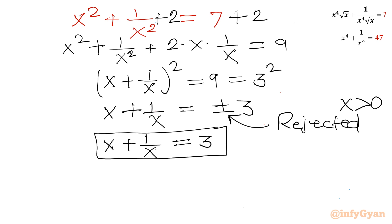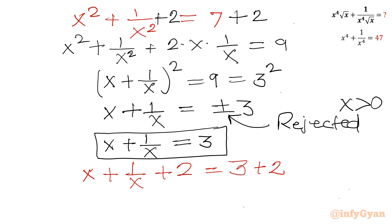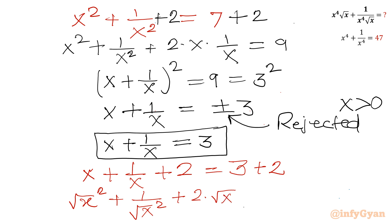Now I will add 2 to both sides once again: x + 1/x + 2 equals 5. I can see that x = (√x)² and 1/x = (1/√x)², and root and square cancel. So this becomes (√x)² + (1/√x)² + 2·√x·(1/√x) = 5.